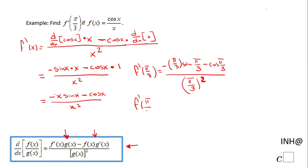We have here negative π over 3, sine of π over 3 is sine of 60 degrees, that is square root of 3 over 2, minus cosine of 60 degrees that will be 1 over 2, over π squared over 9.